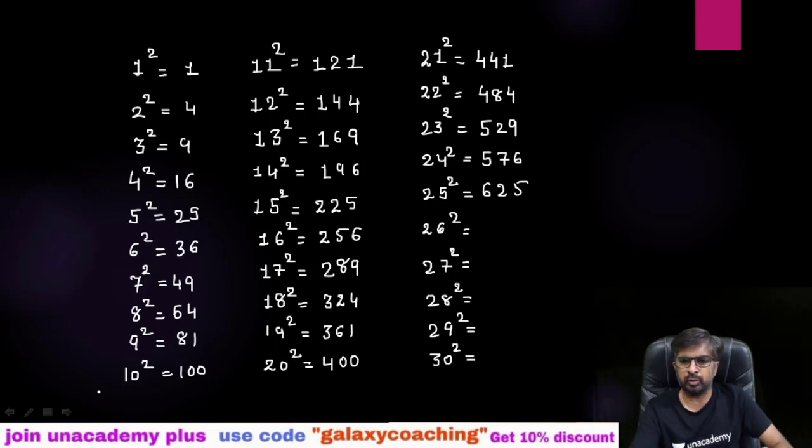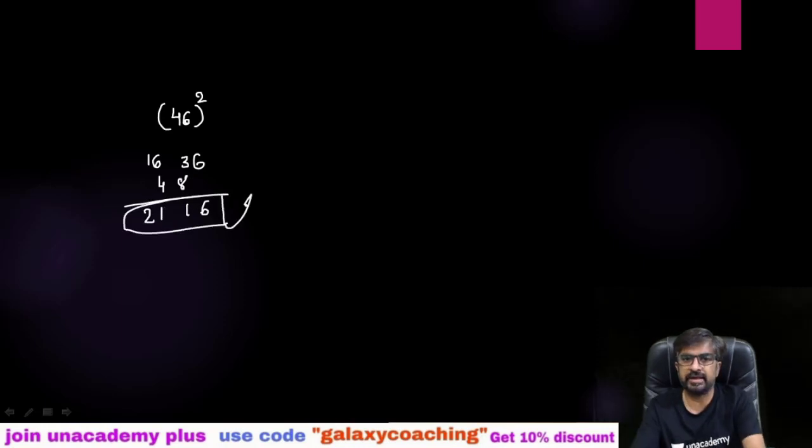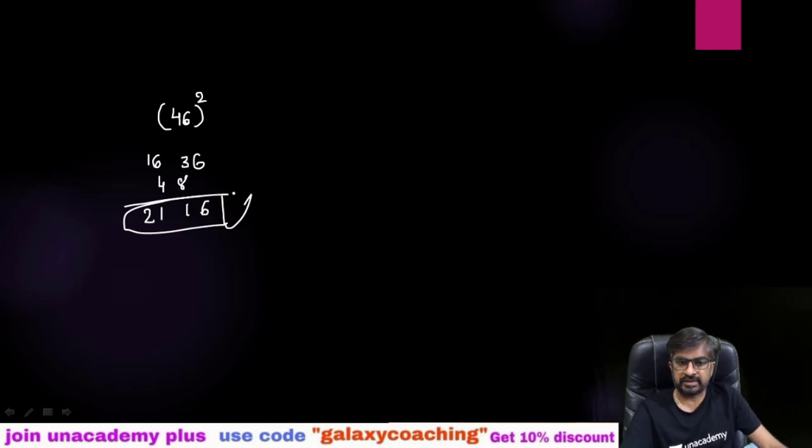First of all, I'll show you how to find out squares of any two-digit number in seconds. Let's start. Suppose when I say find out 46 square, my time starts now. 4 square 16, 6 square 36, 6 times 2 is 24, 2 is 48, and this is your answer. You can see in seconds we can find out this answer.